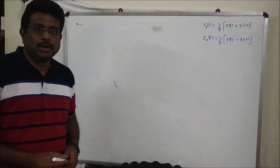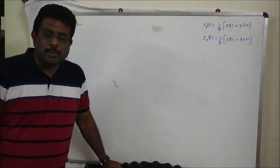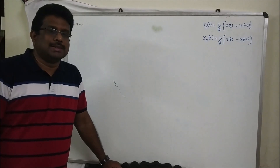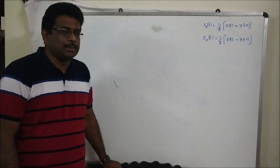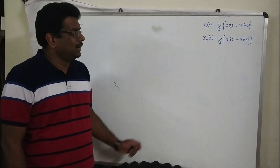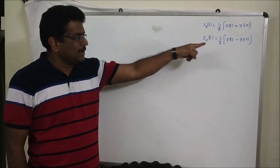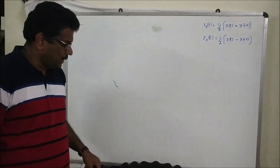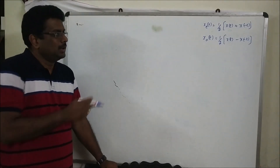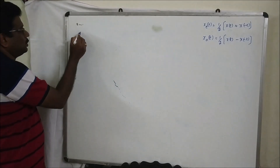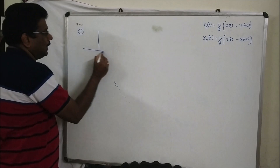Welcome back. Let us do some problems on even and odd signals. As in my introduction, I did some discussion about even signals and created and explained this formula. Any signal is a combination of even and odd signal — that I also explained. Let us do a problem in even and odd.